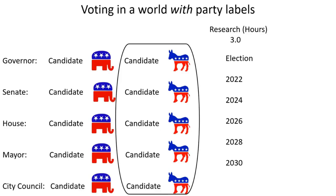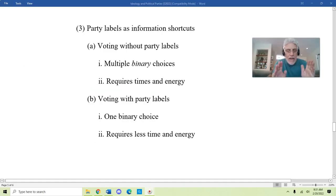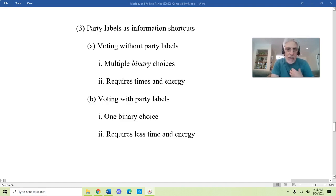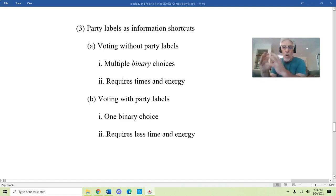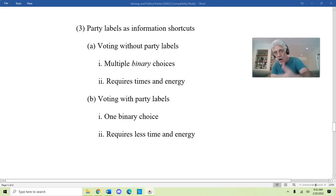Because the more people who participate, the better our democracy functions. Party labels act as information shortcuts — they give you an idea of what somebody believes just by knowing that they're a Democrat or a Republican. You can assume a Democrat agrees with most of the Democratic bundle, and a Republican agrees with most of the Republican bundle. You don't have to research individual candidates. You do in a primary, where everybody has a D or an R — but in a general election, party labels function as an information shortcut.